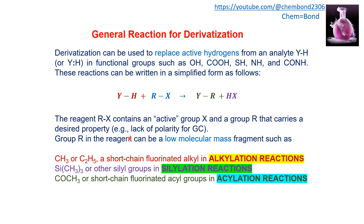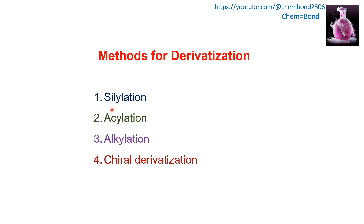According to the R group, which can be ethyl, methyl, acylyl, or acyl, derivatization reactions can be divided into categories: silylation reactions, acylation reactions, alkylation reactions, and chiral derivatization.